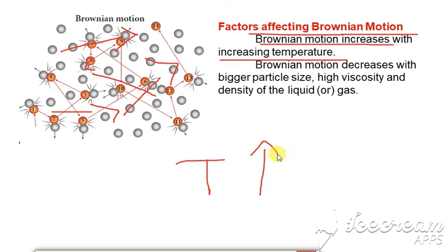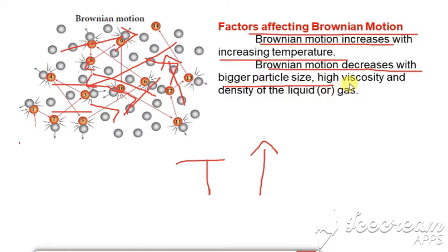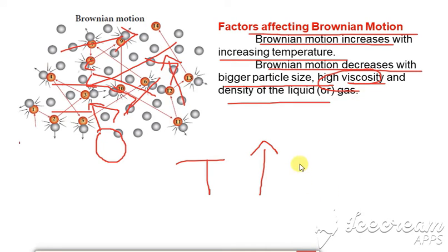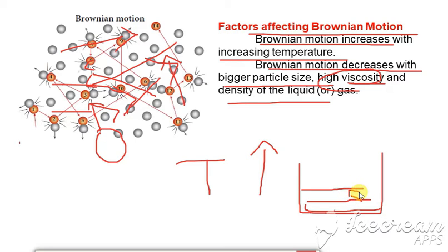When temperature increases, Brownian motion increases, and the particle will move at a faster rate. Brownian motion decreases with bigger particle size, high viscosity, and high density. When the size of the particle is larger, it is harder to move at a faster rate, so Brownian motion decreases. Similarly, when the viscosity of the liquid is high — for example, in oil — the particle moves more slowly. The same applies to the density of the liquid.